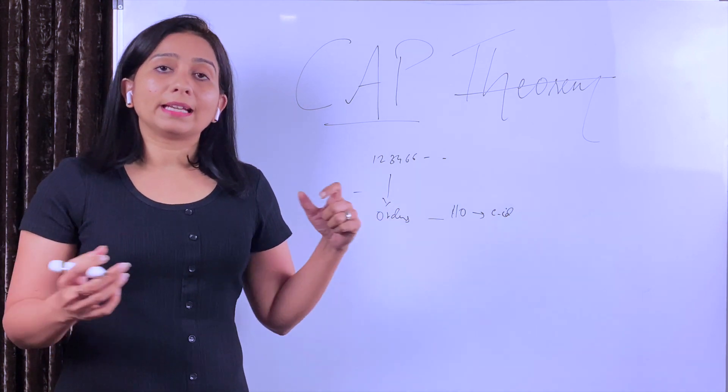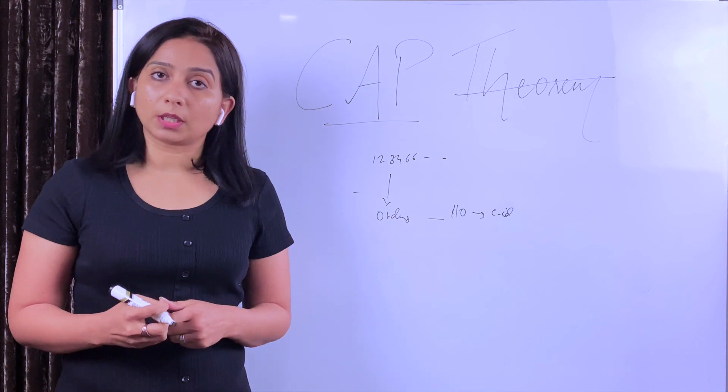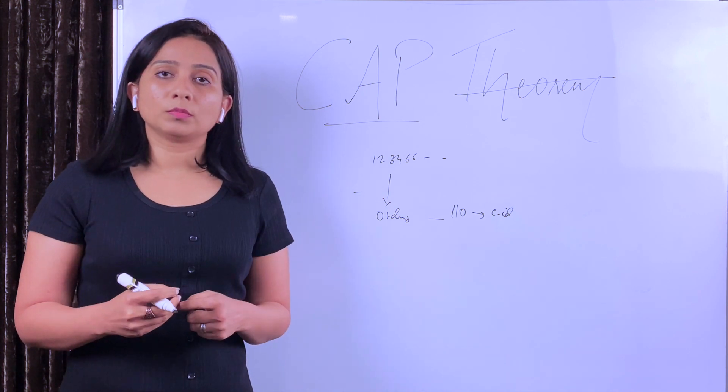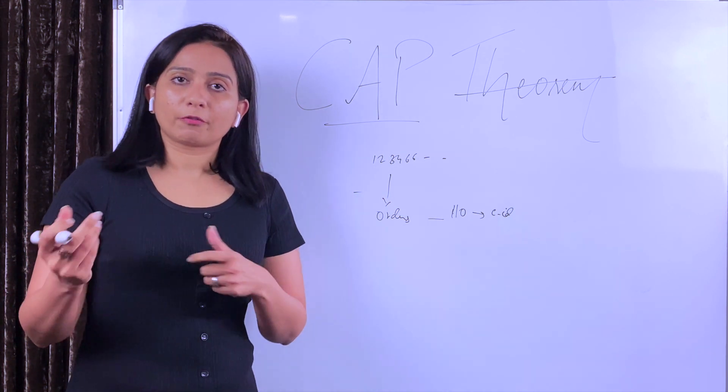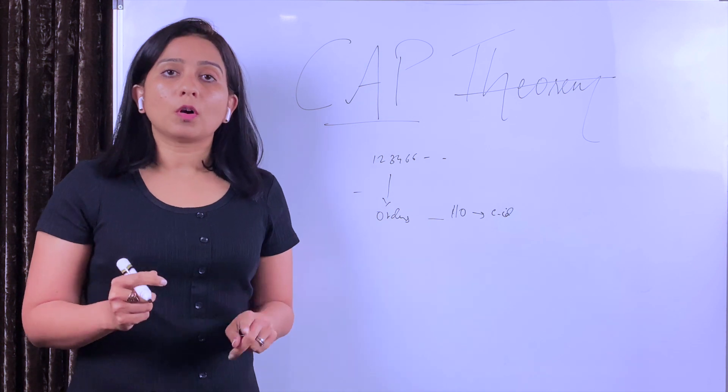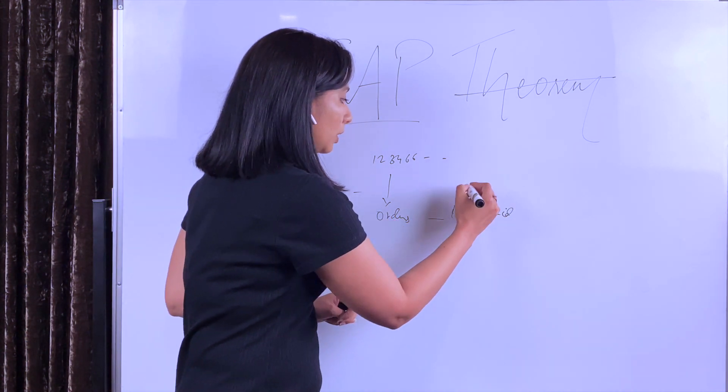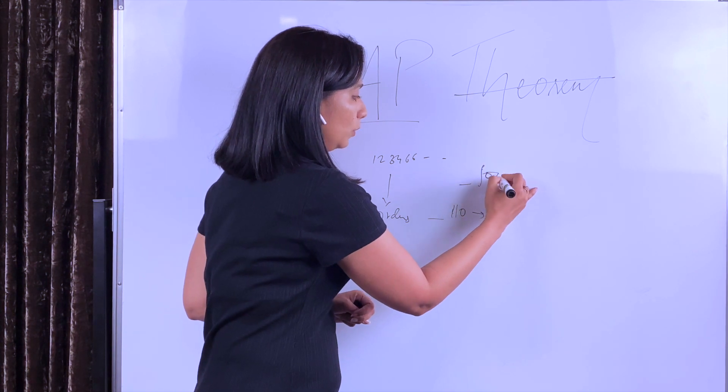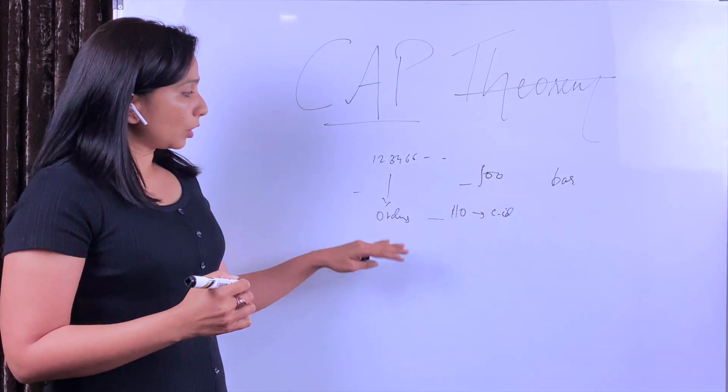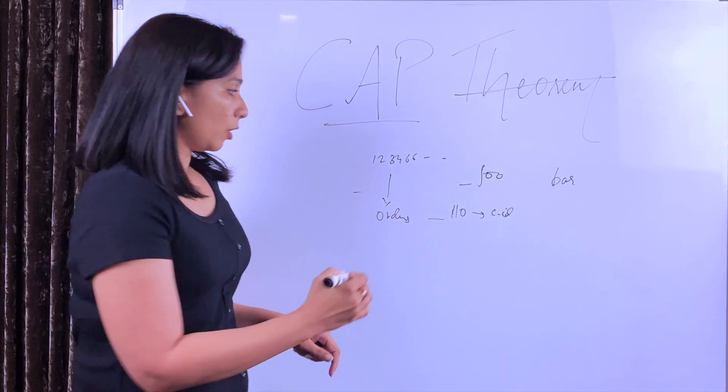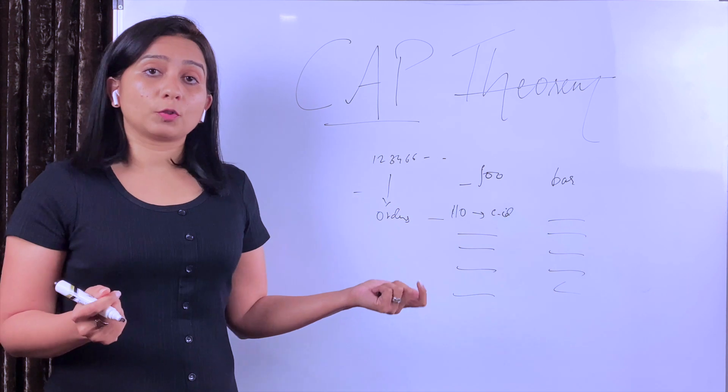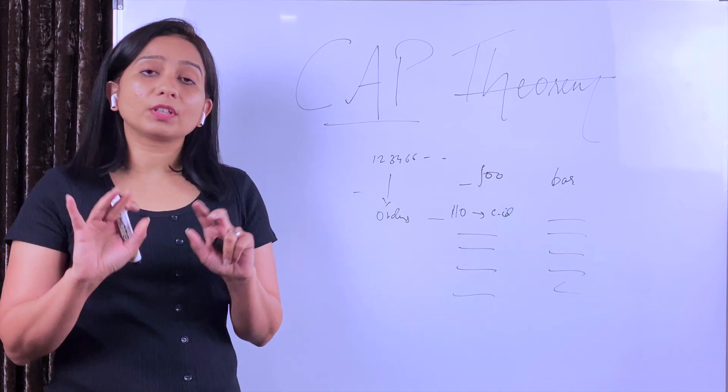Now, your business grows and it becomes 200 orders per day, and it's not possible for you to handle all these 200 calls alone. So what do you do? You seek help from a friend or take a business partner, and then that business partner is also taking orders while you are taking orders. So now there are two of you. You have a notebook, let's call you person foo, and your partner, let's call them bar. You are taking orders and your partner is also taking orders, and your business is running successfully. Everything sounds great.